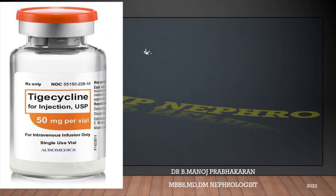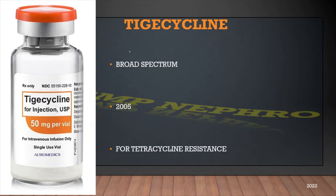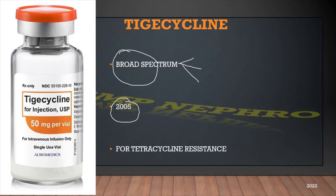The important points with regard to tigecycline: first, what is it? It is a broad spectrum antibiotic having action against gram positive, gram negative, and anaerobes also. Basically, this was approved in 2005 for use, and it mainly came as one of the replacements for tetracycline-resistant gram positive organisms.